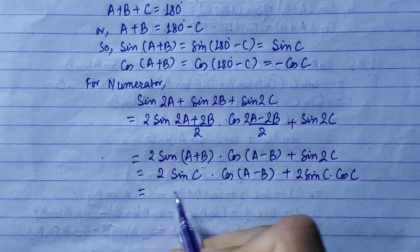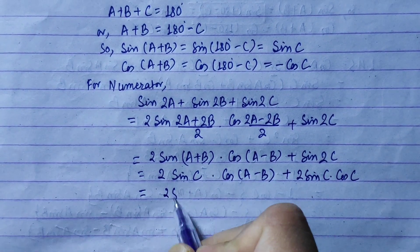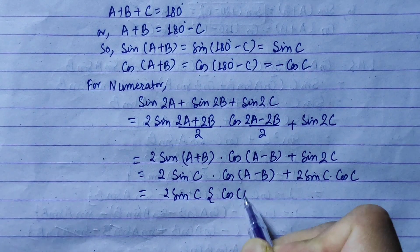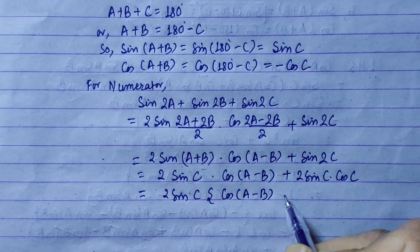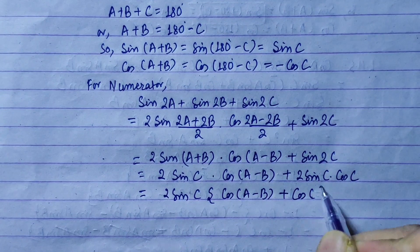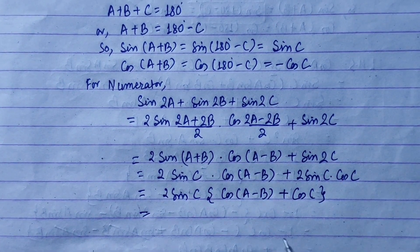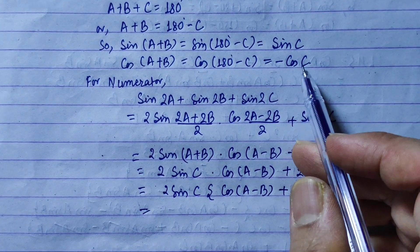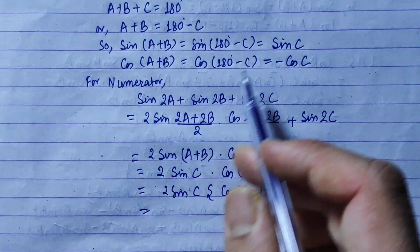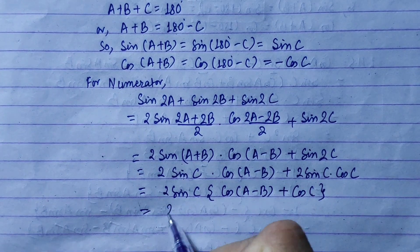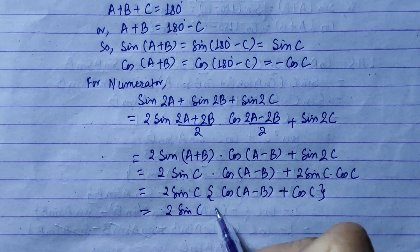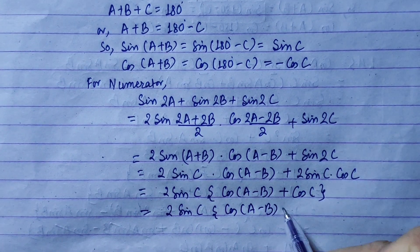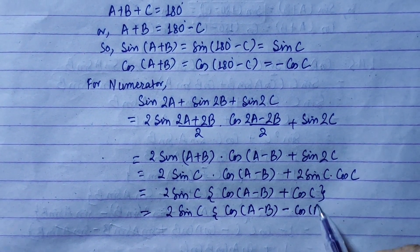What is common? The common factor is 2·sinC. Taking 2·sinC out, we get 2·sinC·(cos(a−b) + cosC). Now applying the condition: cosC = −cos(a+b). So this becomes 2·sinC·(cos(a−b) − cos(a+b)).